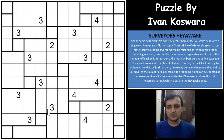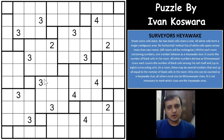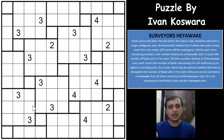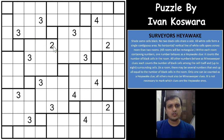So in this Surveyor's Heyawake puzzle, the rule says that in each region there will be more than one number, and one of those numbers will follow the Heyawake rule while all the other numbers will follow the Minesweeper rule. It is up to the solver to find which number is the Heyawake clue and which numbers are the Minesweeper clues. There are exactly 2 numbers in each region — one follows Heyawake and the other follows Minesweeper. With that, we will start solving this puzzle.